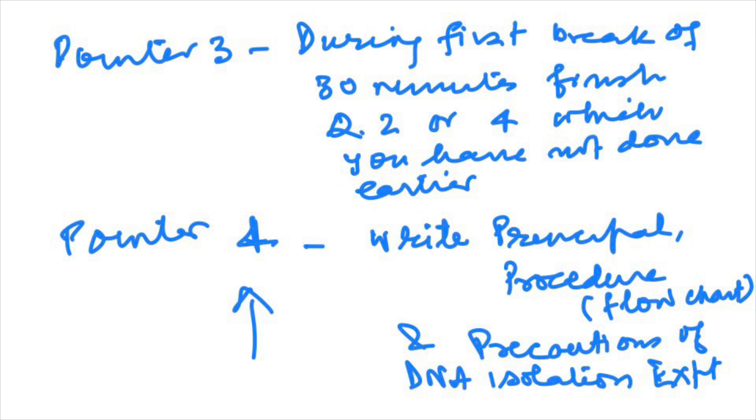So this five marks you can prepare from home and quickly write whenever you get time in between the practical. Observations, please note, is just for one mark, and even if your observation is not right and because of some reason you don't get DNA, still you will get the marks if you show something. You will get full marks for principle and procedure flow chart. Same way you have two marks for precautions.